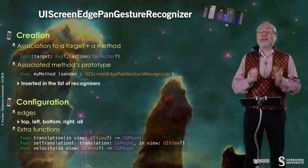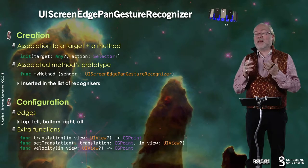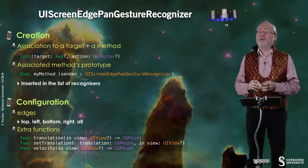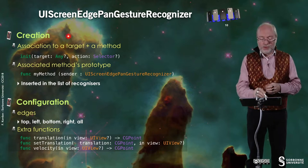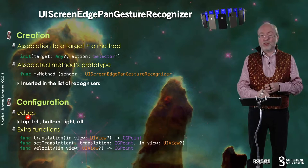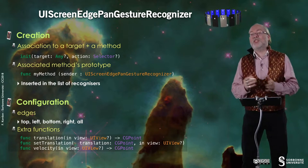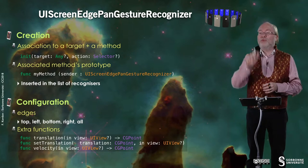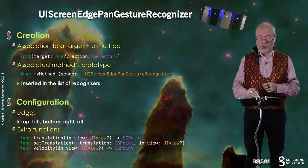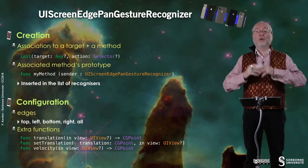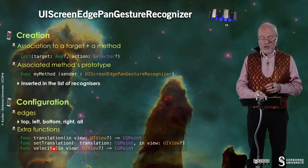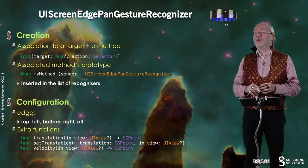UIScreenEdgePanGestureRecognizer is the same as a pan, but it's a pan that starts from the edge of the device. The configuration lets you specify from which edge to start: from top means top to bottom, left means left to right, and so on. You can also specify all to recognize any screen edge. There are also extra functions you can invoke.